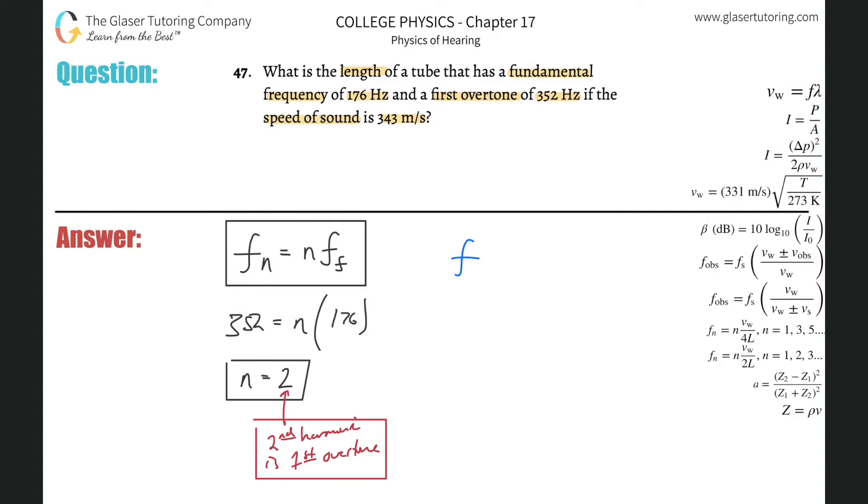So that formula now is that the frequency of harmonic n will be equal to the nth harmonic multiplied by the velocity of sound divided by two times the length of the tube.